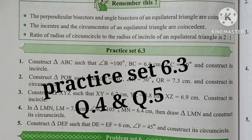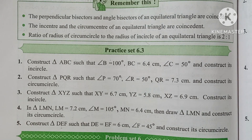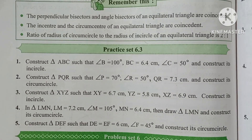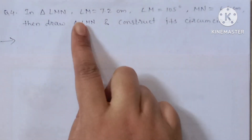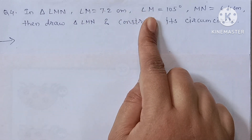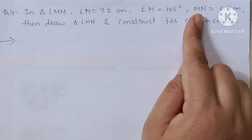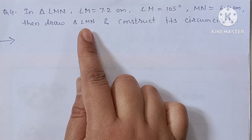Students, welcome to Adhbet Education Channel. Today we are going to solve Practice 6.3, Question Number 4 and 5. In triangle LMN, LM is equal to 7.2 centimeters, angle M is equal to 105 degrees, MN is equal to 6.4 centimeters. Then draw the triangle LMN and construct its circumcircle.